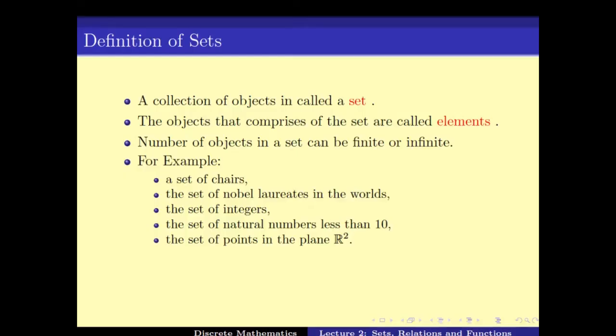The set of natural numbers less than 10 comprises 1, 2, 3, 4, 5, 6, 7, 8, 9, or the set of points in the plane R2. Note that the set of integers and the set of points in the plane R2 are actually infinite sets, meaning the number of elements in the set are infinite. So we can have sets which are finite or we can have sets which are infinite.